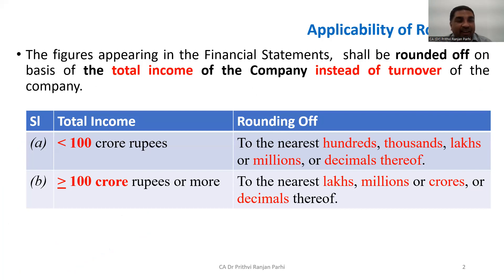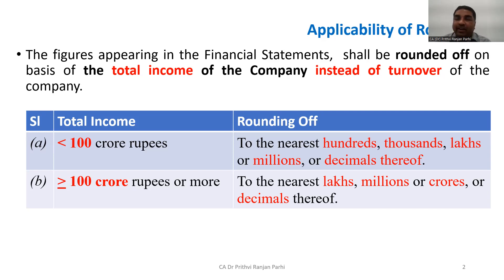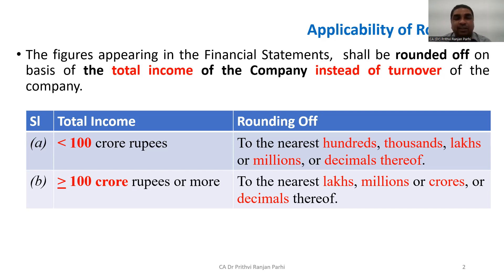If you look at the table, if the total income is less than 100 crore rupees, then the company has the option to convert financial statement figures to the nearest hundreds, thousands, lakhs, or millions — or decimals thereof. So mandatorily he has to convert these figures into one of those units.